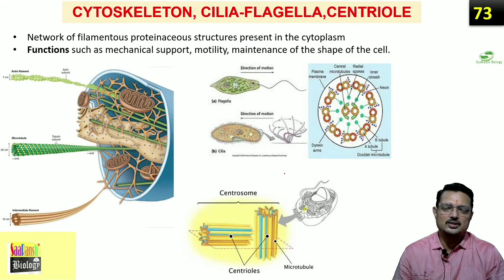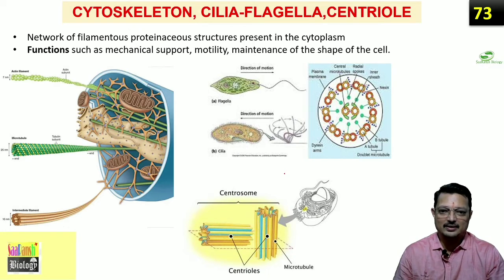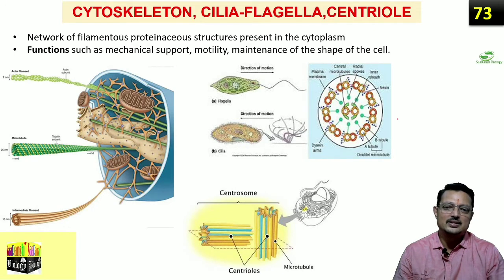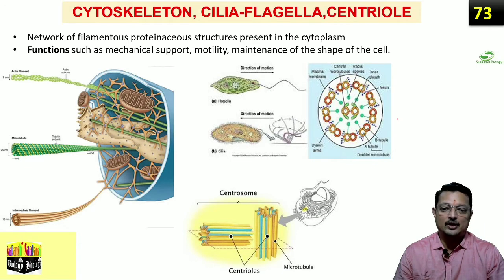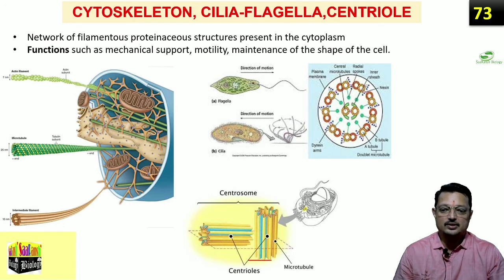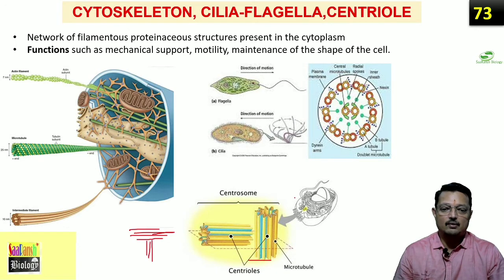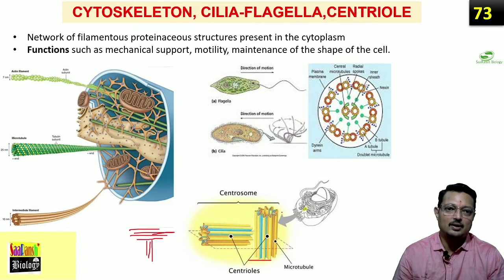Finally, let us talk a little about the cytoskeleton. The cell has certain special proteins — like actin filaments and other protein filaments — that provide structural stability to the cell. In unicellular organisms, there are organelles like cilia and flagella that help in locomotion, and cilia are present in many of our cells as well. For cell division, a special organelle found in animal cells is the centrosome, which is made up of centrioles. The centriole has a T-like structure made of special microtubules and is important for cell division.